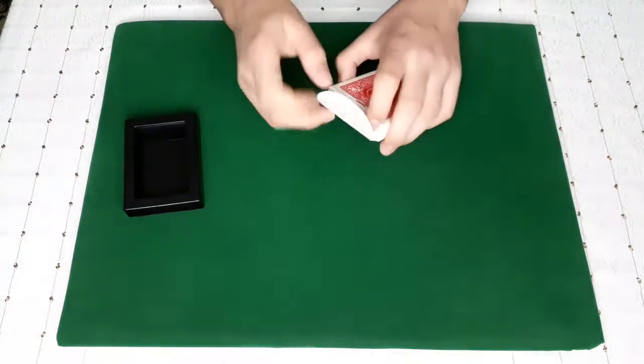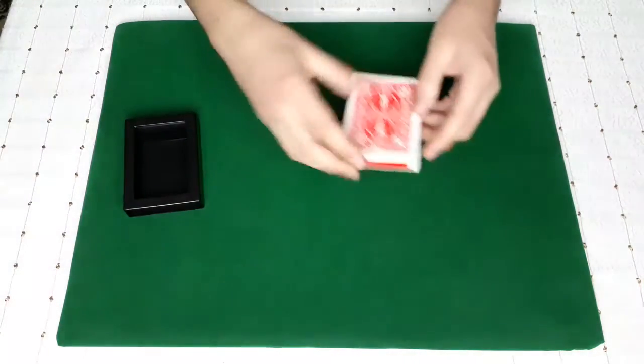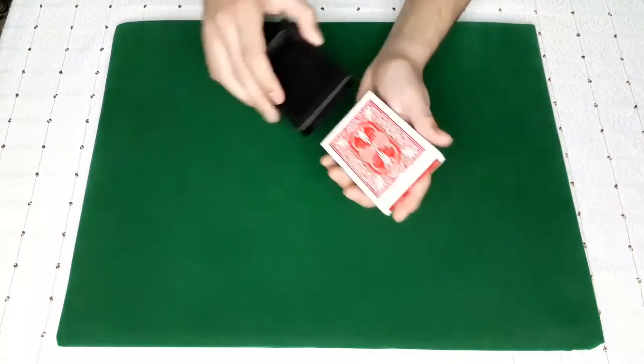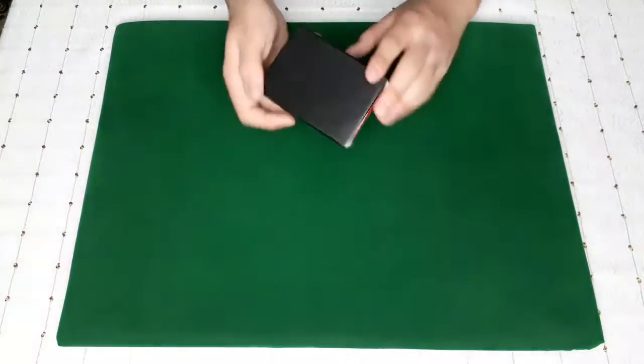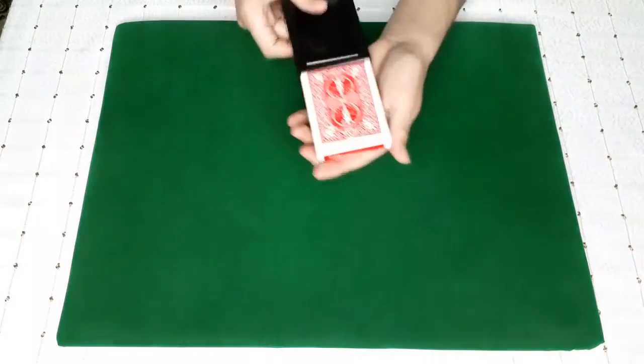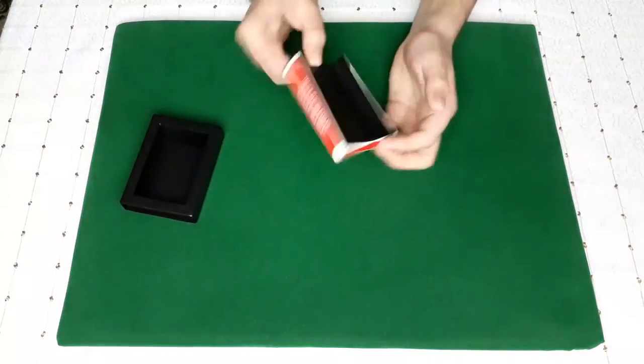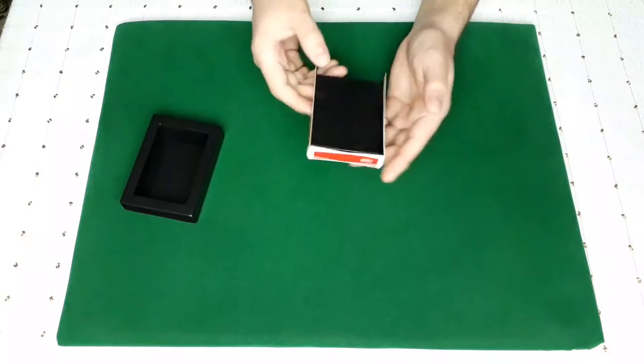So the spectator will think that this deck is real. When we want to perform the trick, we start the trick just like this. Show them the deck of playing cards without showing them the bottom.